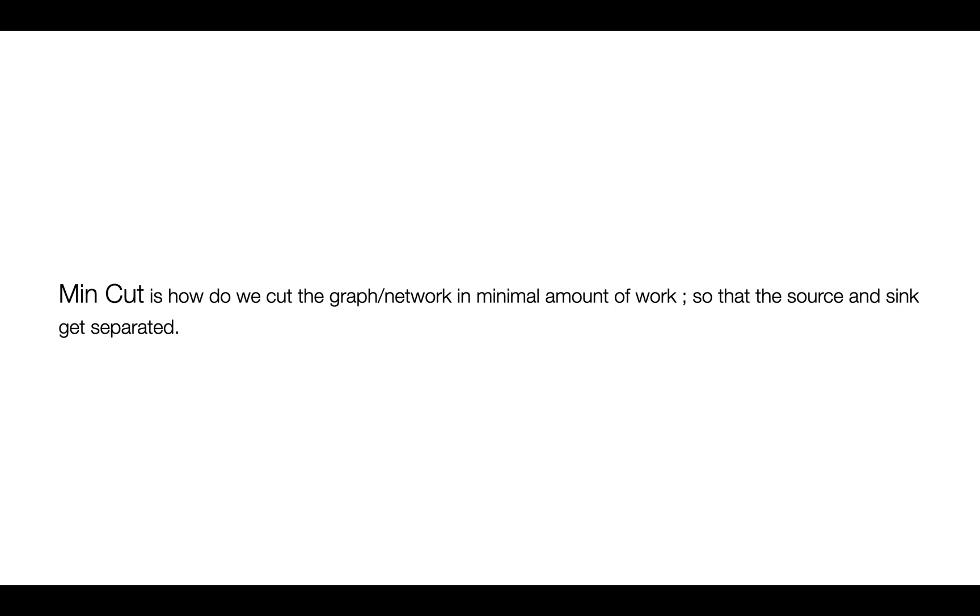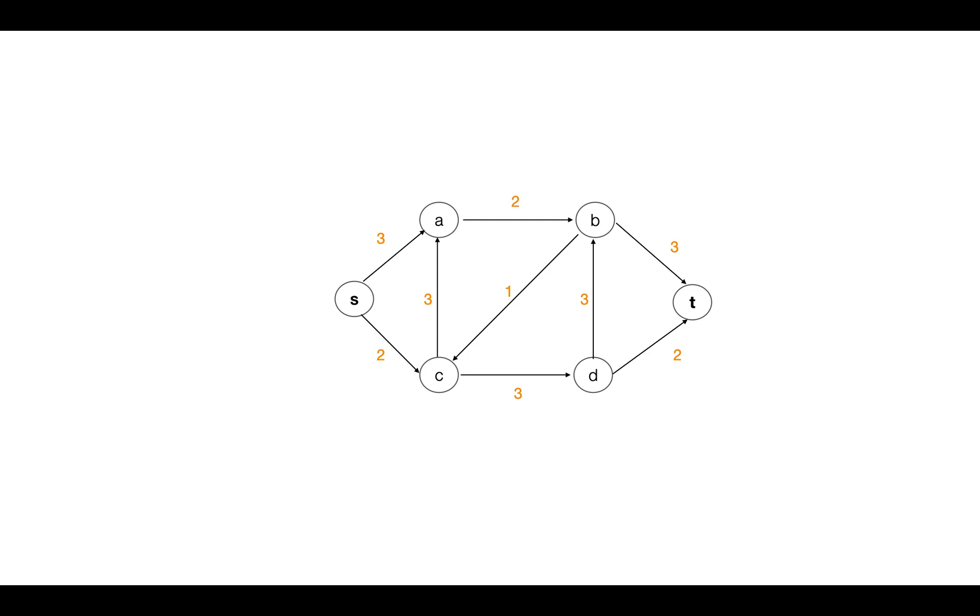To understand min cut better, let's first talk about what a cut is. What exactly does a cut mean in a flow network? For example, if this is the given graph and we draw an s-t cut onto this network, the two parts in which the network gets divided are called S and T parts. All the vertices on the source side belong to the S part and all the vertices on the sink side belong to the T part.